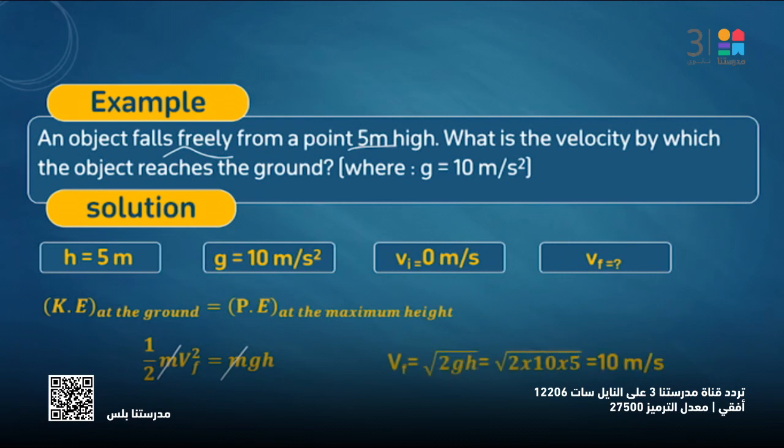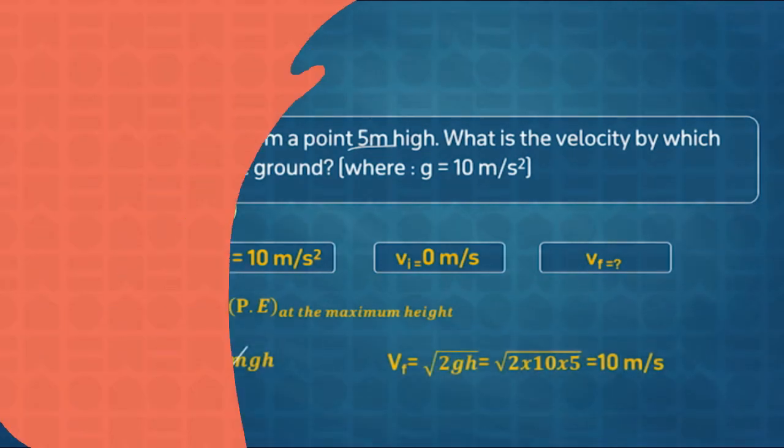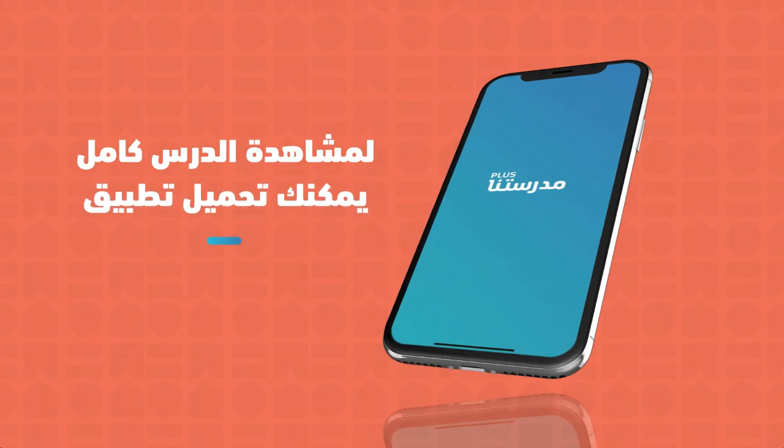It will equal the square root of 2gh. Square root of 2 times g, which is 10, times h, which is 5. So it will be 10 meters per second. Okay.